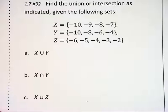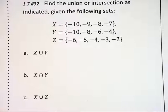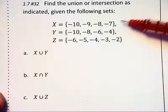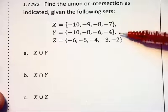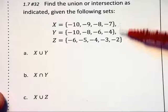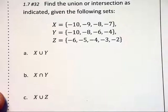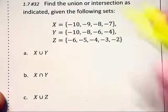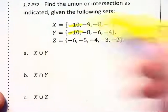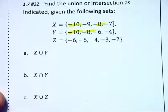Here we have three sets for which we'd like to find various unions and intersections. The first problem is asking us to unite sets X and Y. That means we join these two sets together, and if there are any duplicates — as we see here with the negative tens and the negative eights — we only write them once.